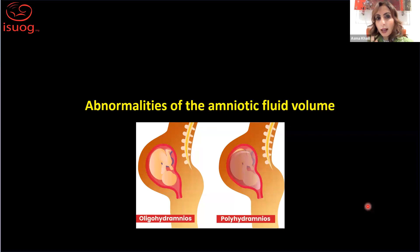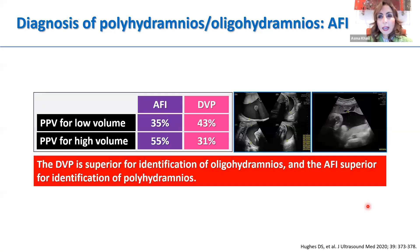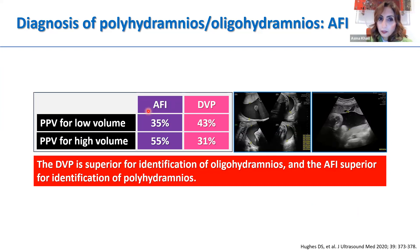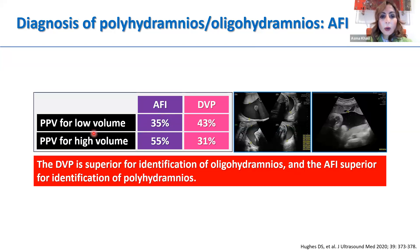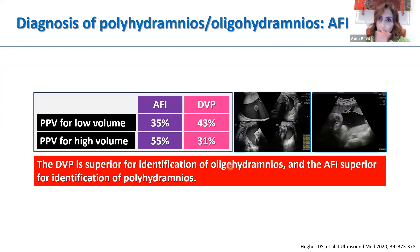I'm going to share with you the section on abnormalities of amniotic fluid volume — how we diagnose polyhydramnios and oligohydramnios. We have the amniotic fluid index (AFI) and the deepest vertical pocket (DVP), which are commonly used interchangeably. However, looking at the evidence, for low volume — oligohydramnios — the positive predictive value is actually higher using the DVP than the AFI, suggesting DVP is better for diagnosing oligohydramnios. For high volume, the AFI has a higher positive predictive value than the DVP. So DVP is superior for oligohydramnios, while AFI is superior for polyhydramnios.